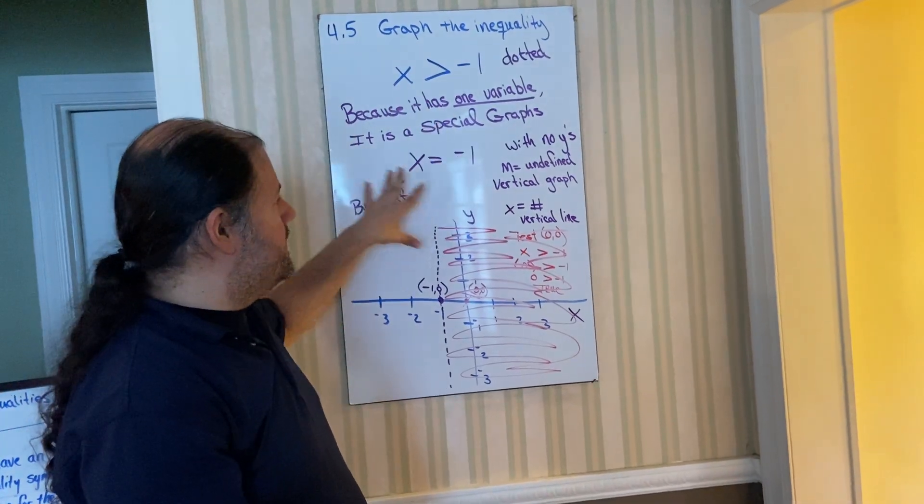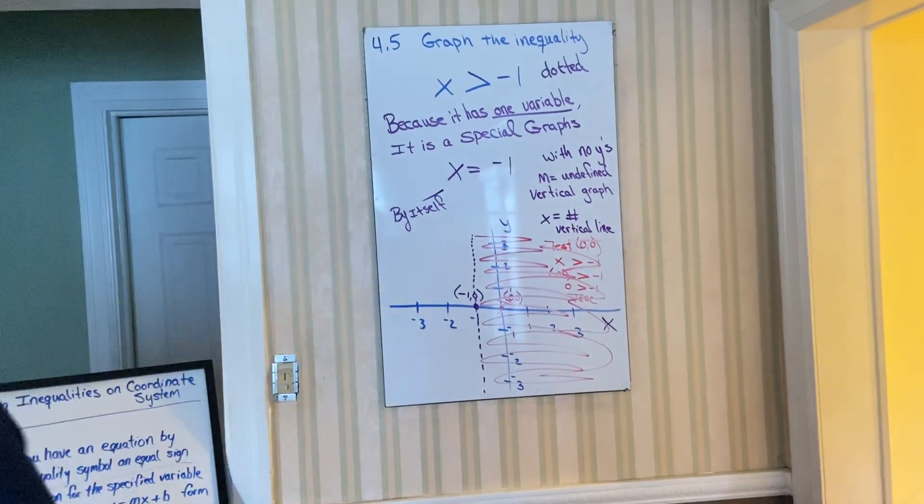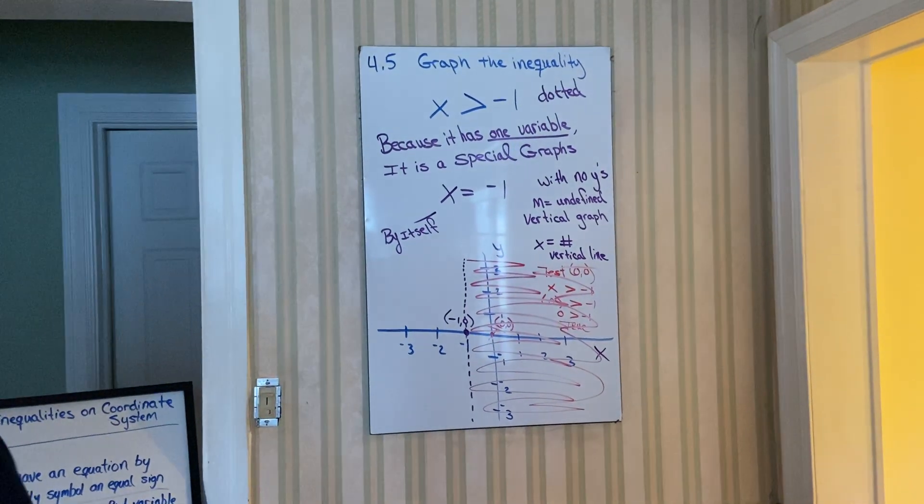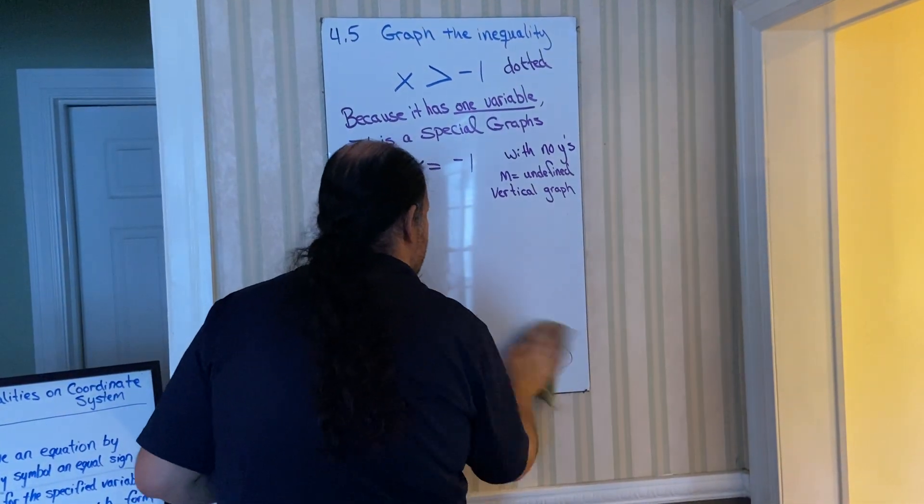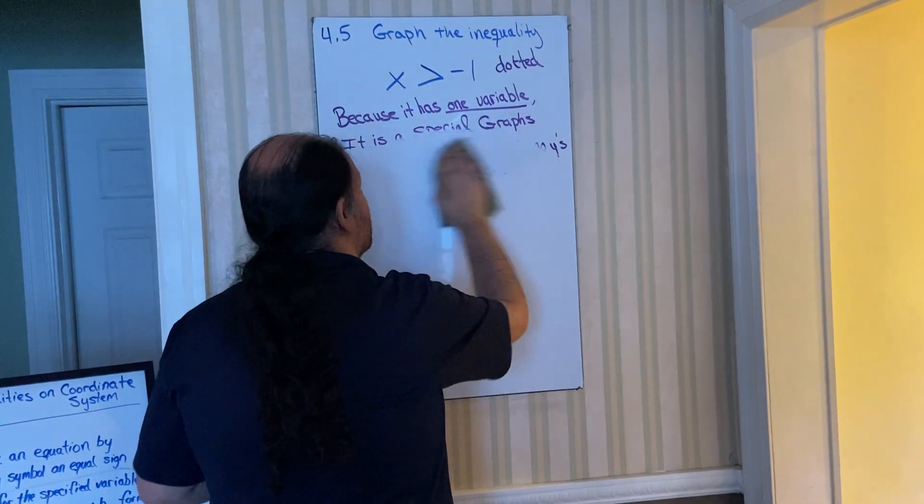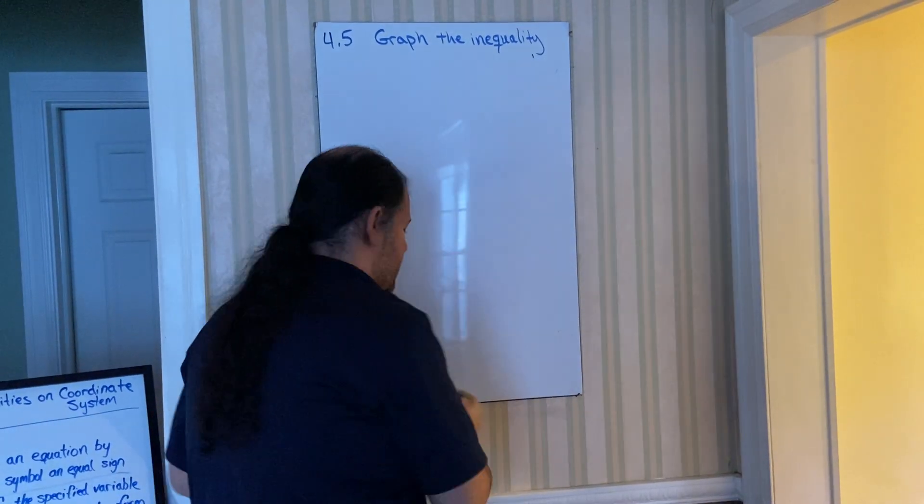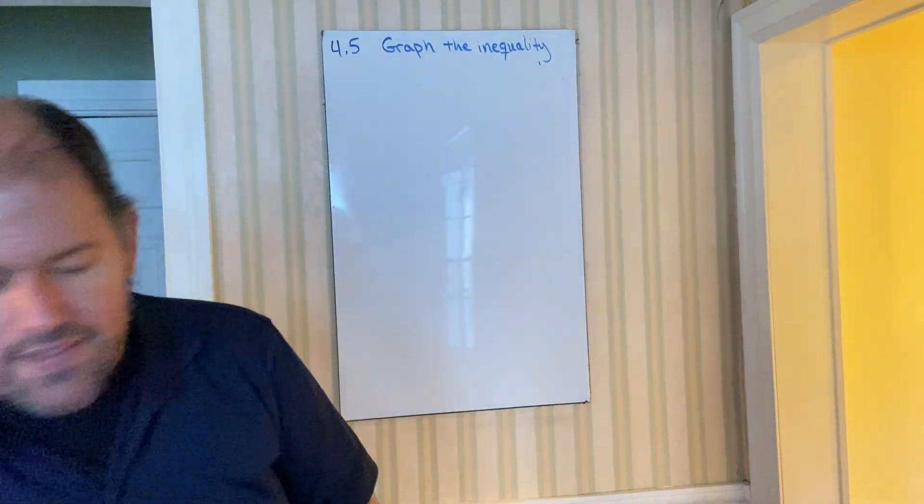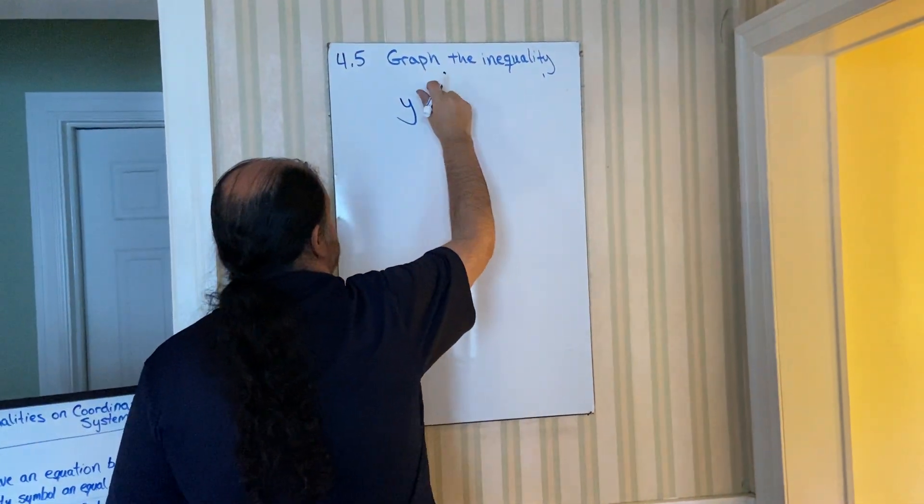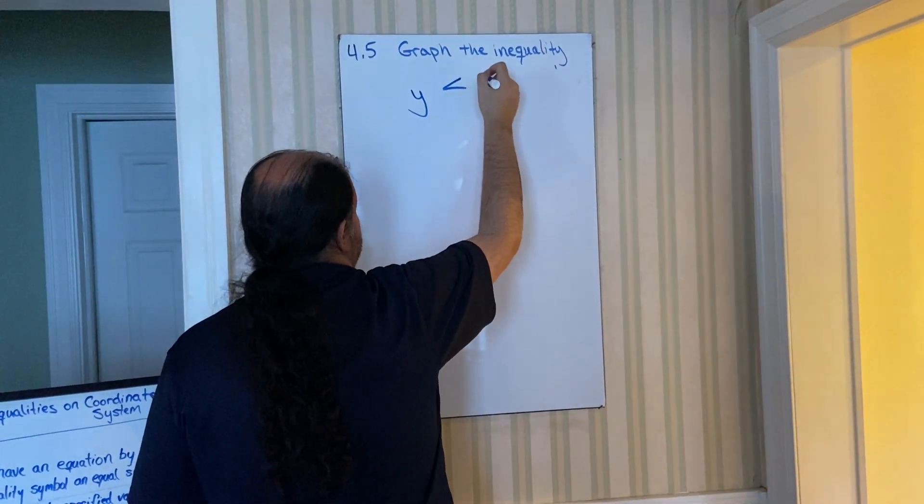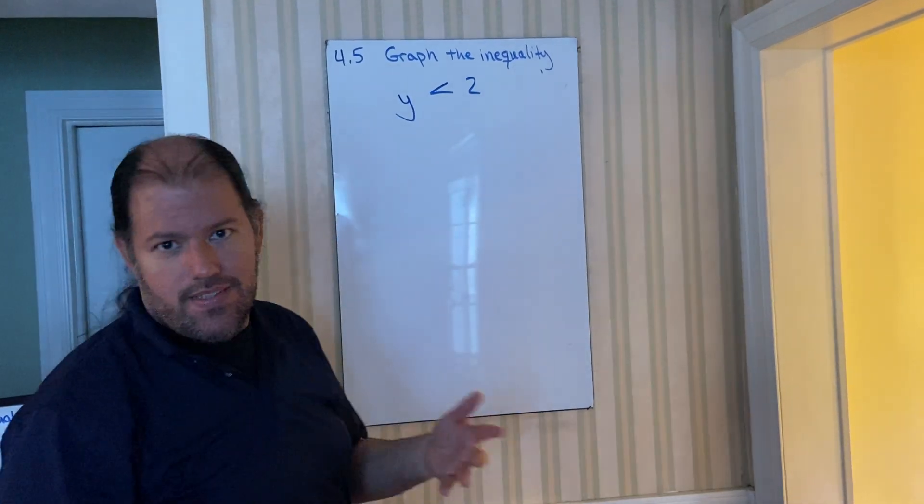Now, let me erase, and let's just do one that has y, so that you have some practice to show that there is a difference between x and y. So let me erase, and let's say it said y was, I don't know, less than two. Okay? So let's do this guy.